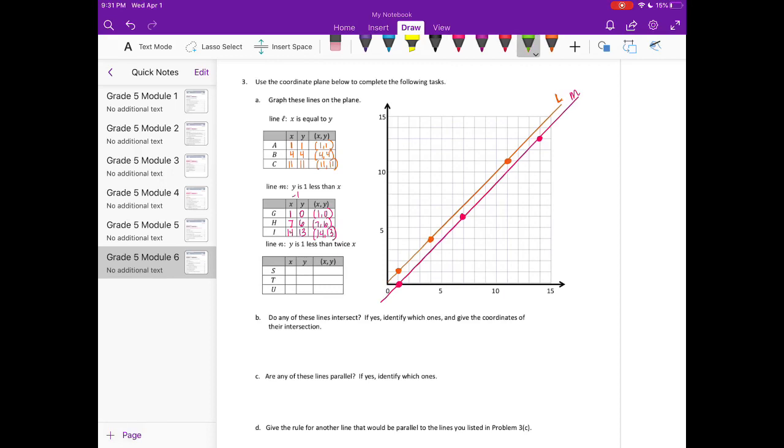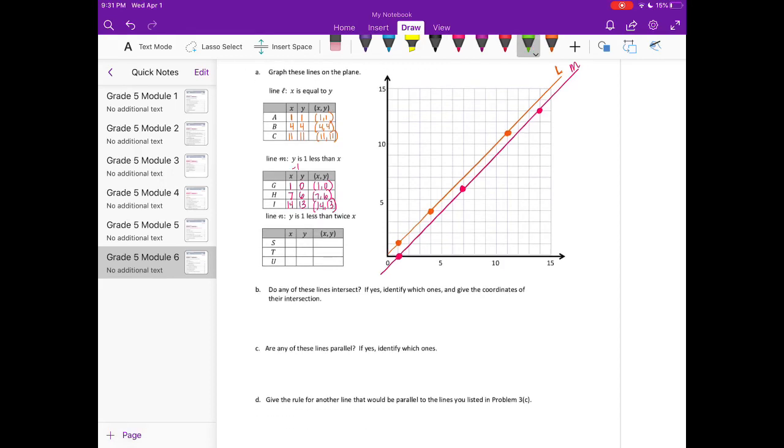Let's do line N. Y is 1 less than twice x. If I pick x of 2, so if x is 2, y is 1 less than twice that, so we're going to do times 2 minus 1. So 2 times 2 is 4 minus 1, so y would be 3. If I have x as 4, 4 times 2 is 8 minus 1, y would be 7.